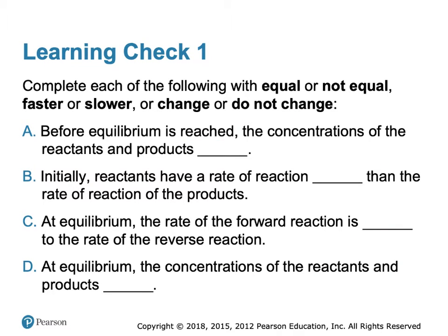Let's complete the following statements. Before equilibrium is reached, the concentrations of the reactants and products change. Initially, reactants have a reaction rate faster than the rate of reaction of products, because we are trying to form products and we have a higher concentration of reactants. At equilibrium, the rate of the forward reaction is equal to the rate of the reverse reaction, and the concentrations of the reactants and products do not change.